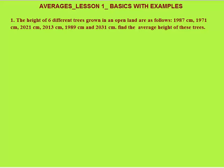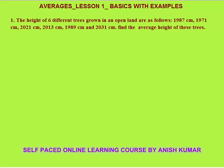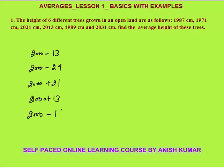Let's start with questions based on averages. The only concept is: average equals total by N. The height of six different trees grown in an open land are given — you need to find the average height. Instead of adding big numbers directly, we'll write each number with respect to 2000. So 1987 = 2000 − 13, 2021 = 2000 + 21, 2013 = 2000 + 13, 1989 = 2000 − 11, and 2031 = 2000 + 31.